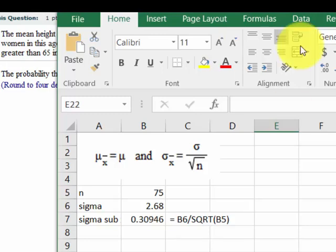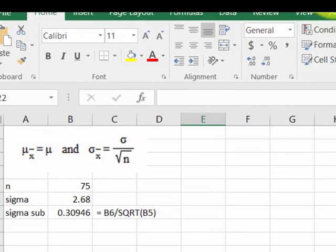Let's bring up Excel, that's my favorite calculator. And because we've got a sample size greater than 30, we can use the central limit theorem, which says the mean of the sample, μ_x̄, is equal to the mean of the population. And it also says that the standard deviation, σ_x̄, is equal to the standard deviation of the population σ divided by the square root of the sample size n.